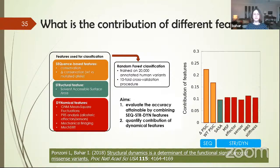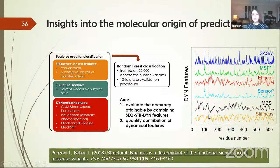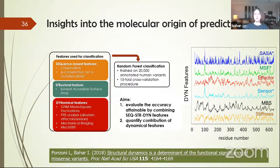The second question was how much do different features contribute. Sequence features are important, as is surface area, but dynamic features also have substantial contribution. More importantly, our software is not a black box — we can go back and understand the molecular origin of the observed score. For example, if a residue undergoes a deleterious mutation, we can explain it because the position is very stiff, or it plays an important effector role, so allosteric communication will not take place, and the surface area is very tightly packed.